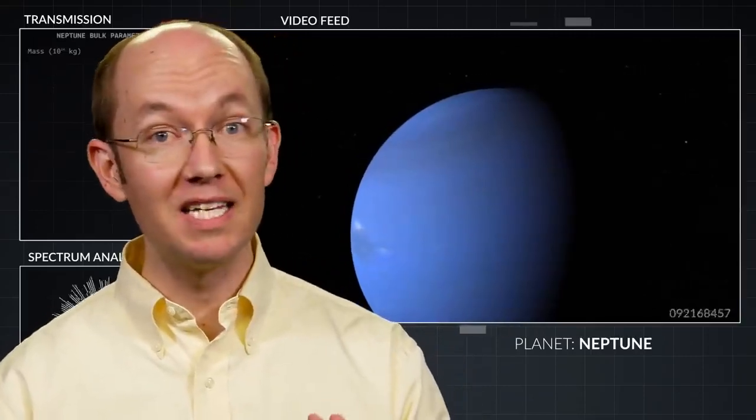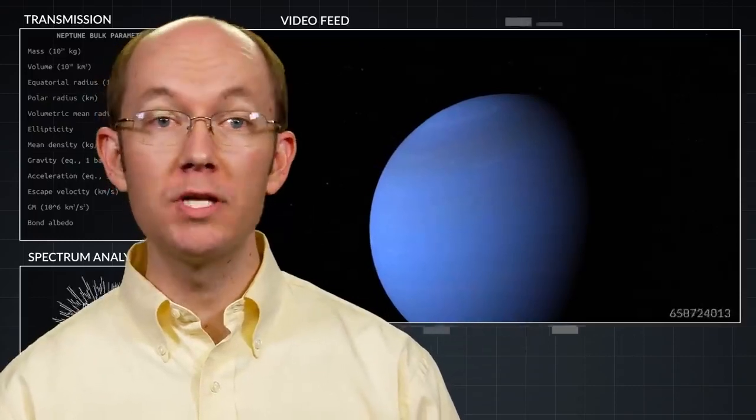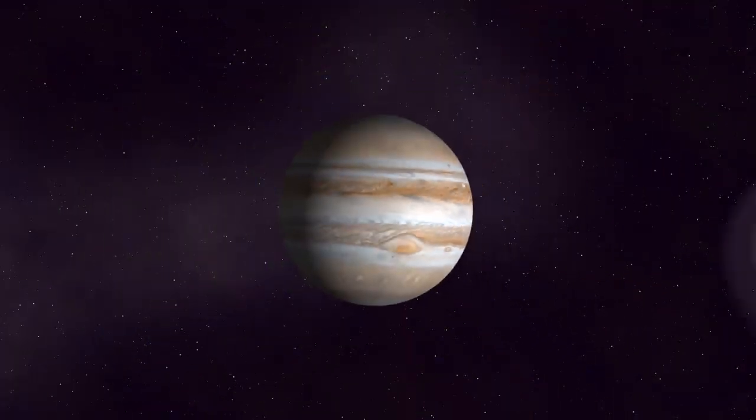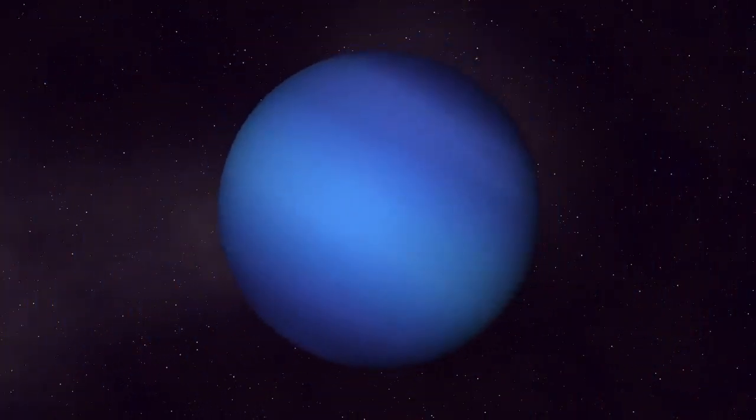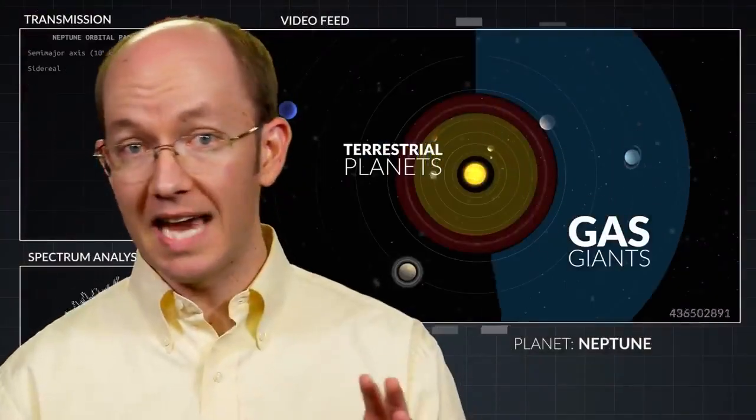When we consider the most distant planet, Neptune, we find that it has a highly active atmosphere. While Jupiter's winds reach speeds of 400 miles per hour, Neptune has the highest atmospheric wind speed in the entire solar system, reaching speeds of nearly 1200 miles per hour.